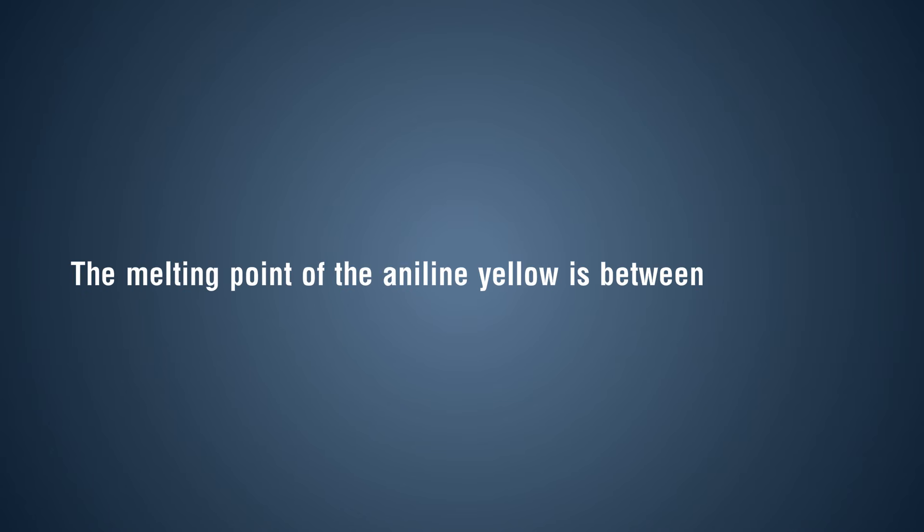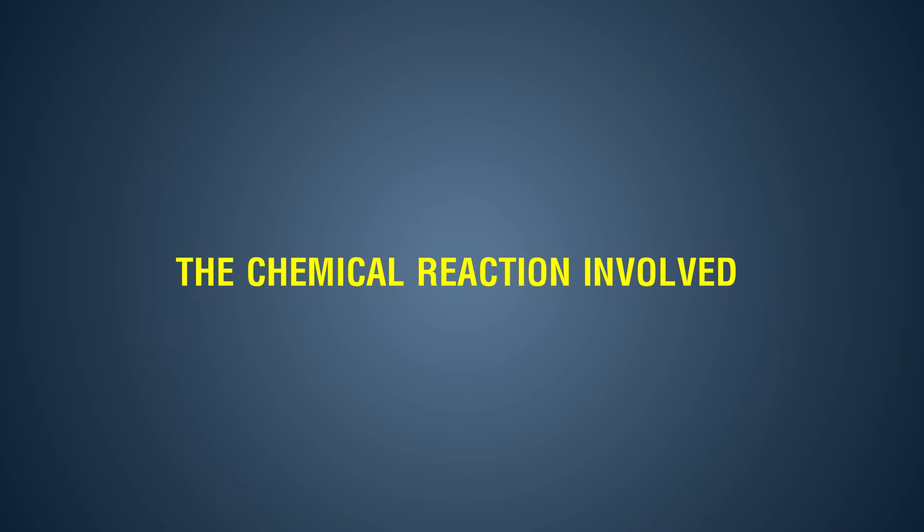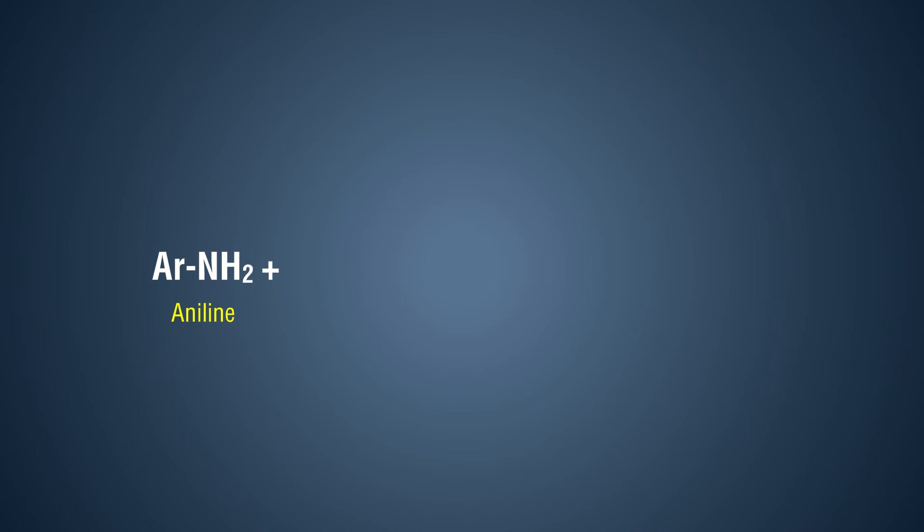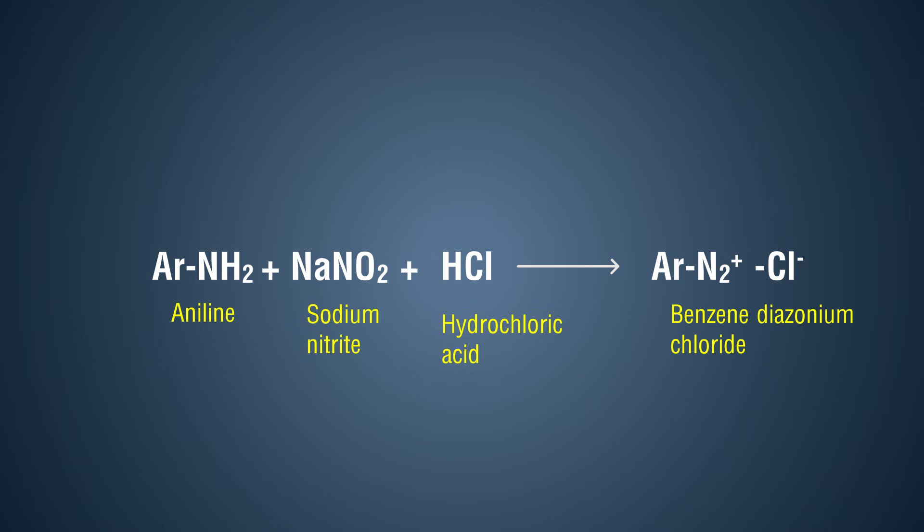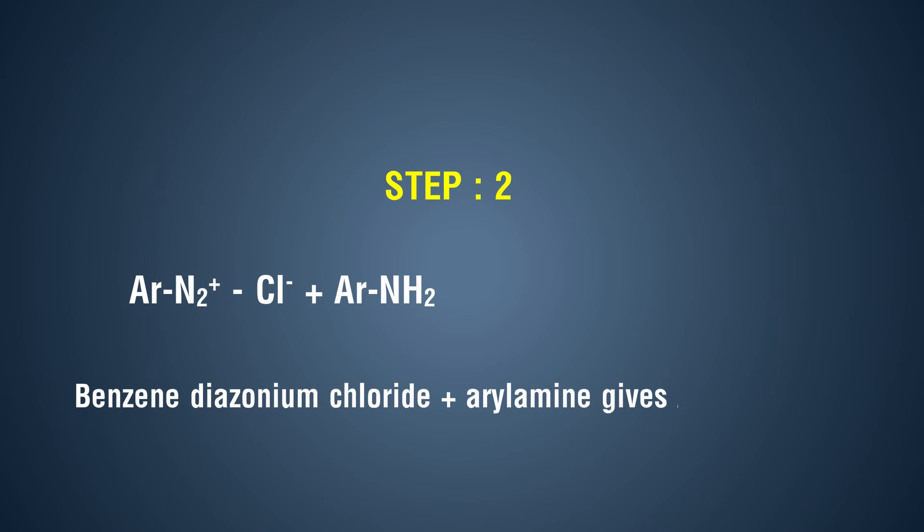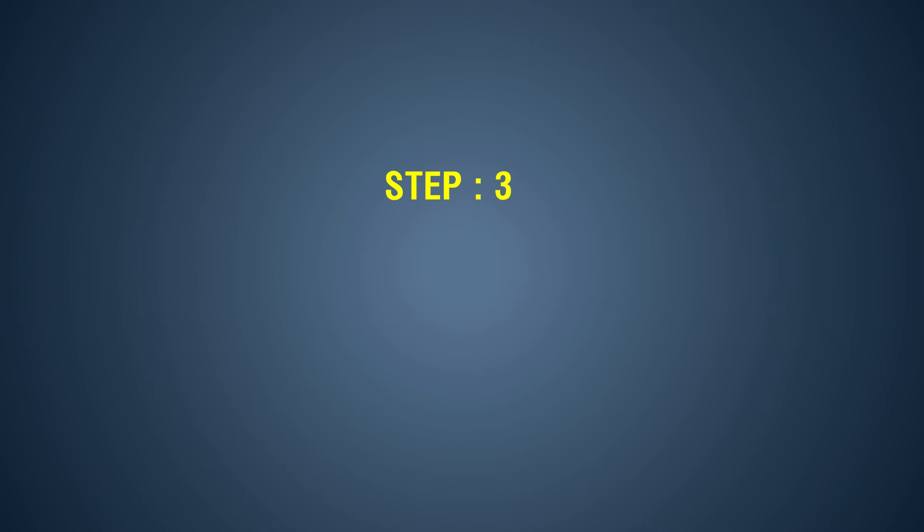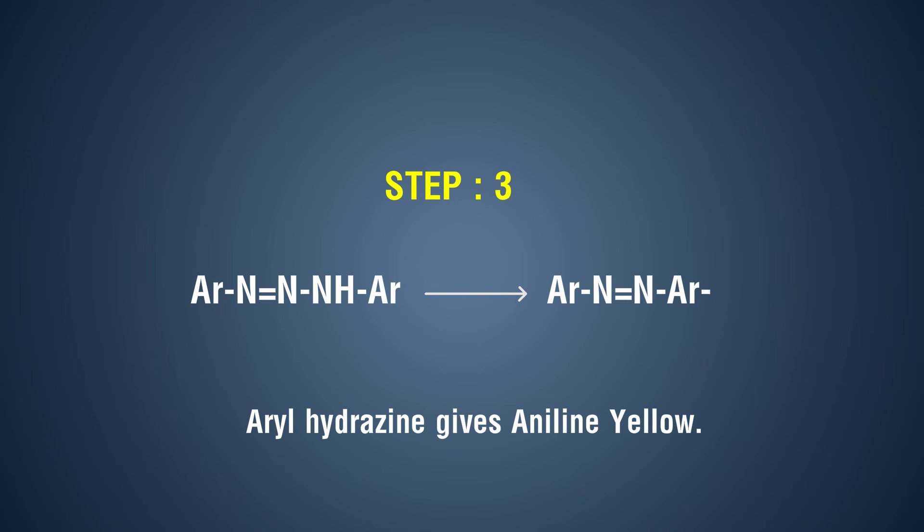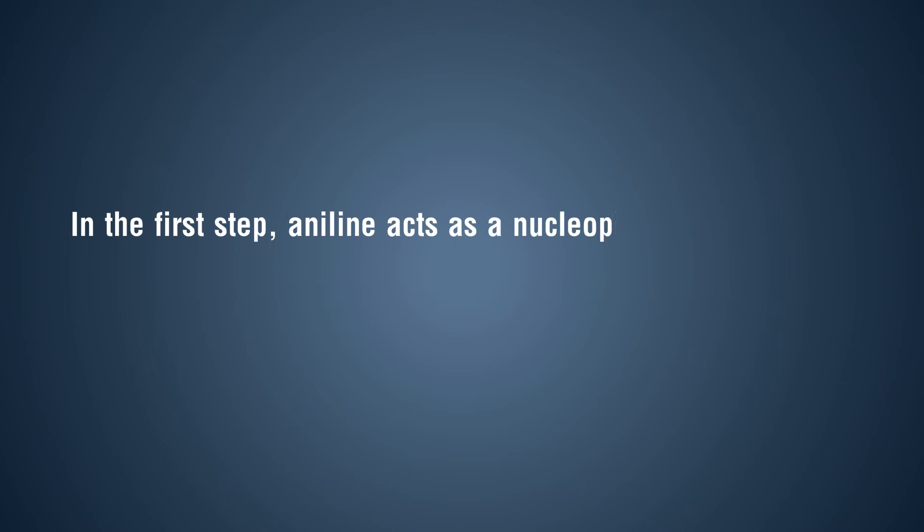The melting point of the aniline yellow is between 123 to 126 degrees Celsius. The chemical reaction involved: Step one, when aniline is treated with sodium nitrite in the presence of acid, aniline (Ar-NH2) plus sodium nitrite (NaNO2) plus hydrochloric acid (HCl) gives benzene diazonium chloride (Ar-N2+ Cl-). Step two: benzene diazonium plus aryl amine gives aryl hydrazine. Aryl hydrazine gives aniline yellow. Step three: In the first step, aniline acts as a nucleophile and reacts with benzene diazonium chloride to form a carbon-nitrogen bond. The product loses H+ and gives the azo dye.